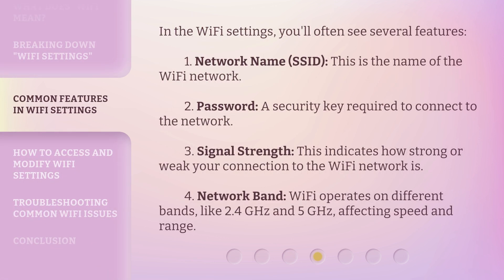In the Wi-Fi settings, you'll often see several features. 1. Network name (SSID): This is the name of the Wi-Fi network. 2. Password: A security key required to connect to the network. 3. Signal strength: This indicates how strong or weak your connection to the Wi-Fi network is. 4. Network band: Wi-Fi operates on different bands, like 2.4 GHz and 5 GHz, affecting speed and range.